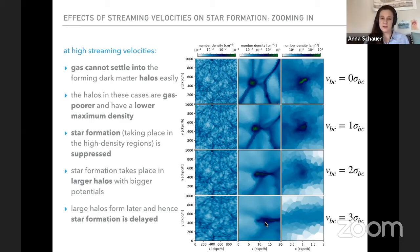Where we can still form stars is when we move to larger halos. So with larger halos, they have a larger potential and they can still attract gas. And those larger halos form later in the universe due to hierarchical structure formation. So overall, streaming velocities delay star formation. Streaming velocities delay star formation in the early universe.